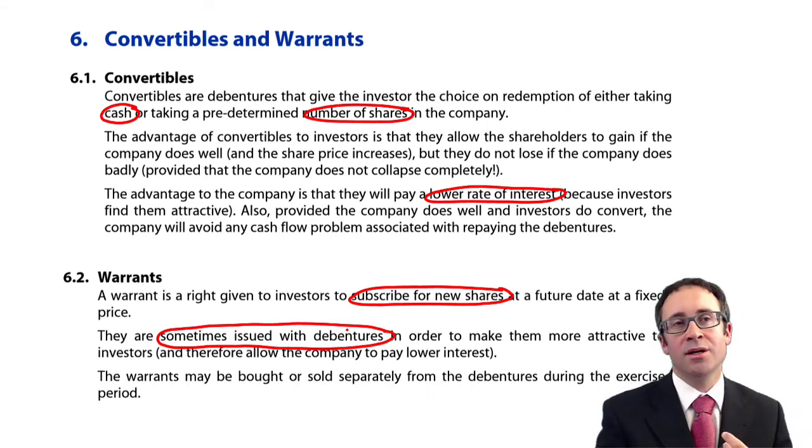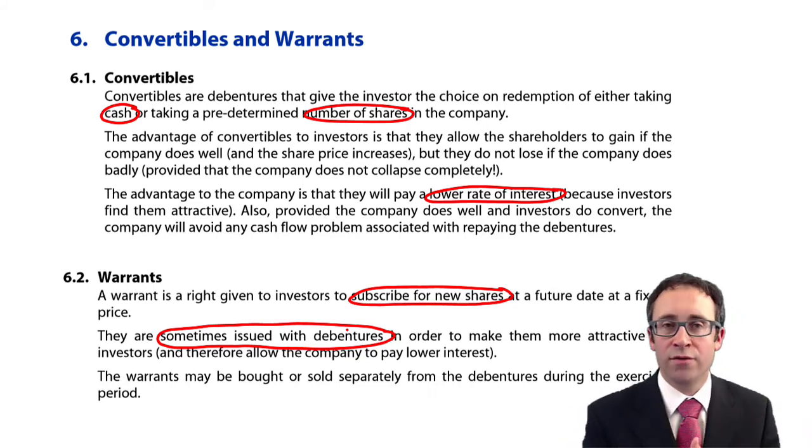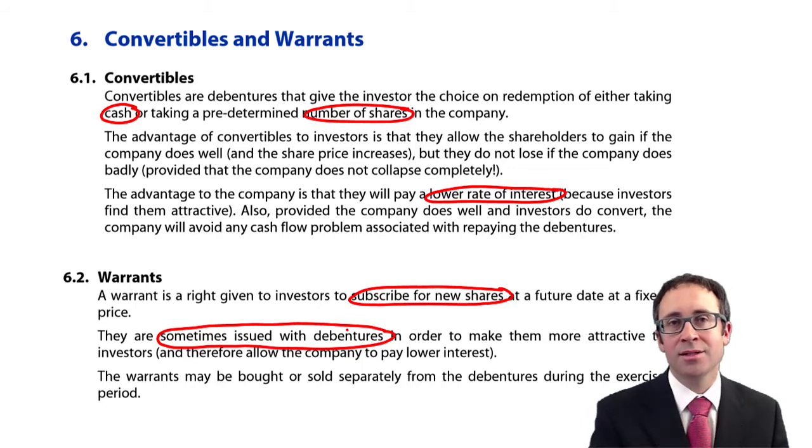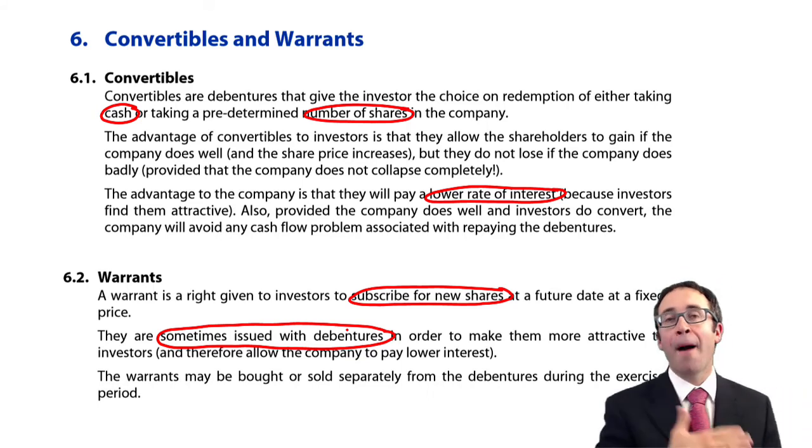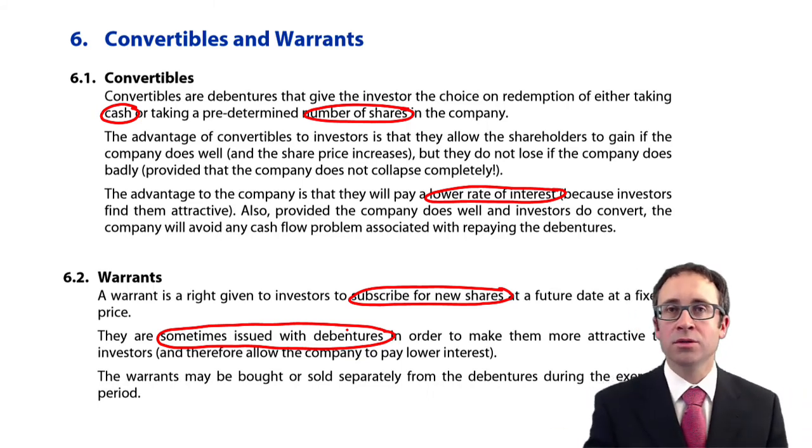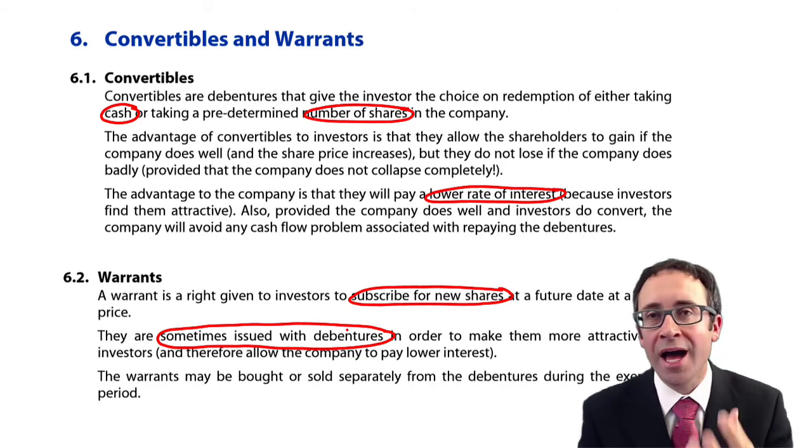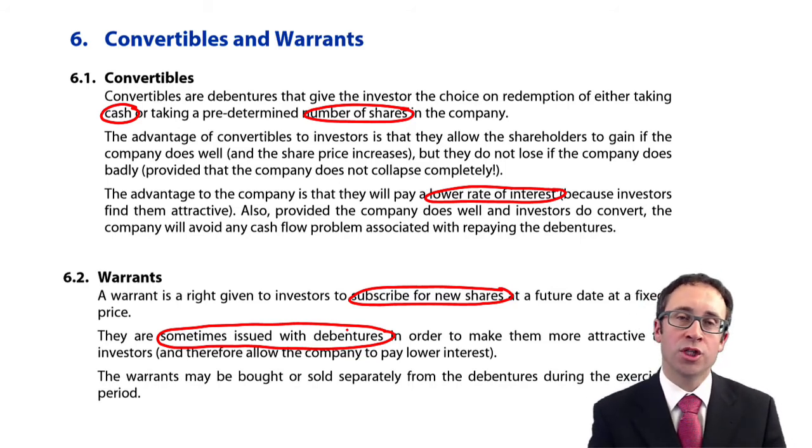It's because you have a debenture and you have the issue of shares, people get confused. Warrants, the investor has to pay to get some additional shares and will get the cash back anyway. But your convertibles, you either will get cash or you receive shares. You do not have to pay for those shares.